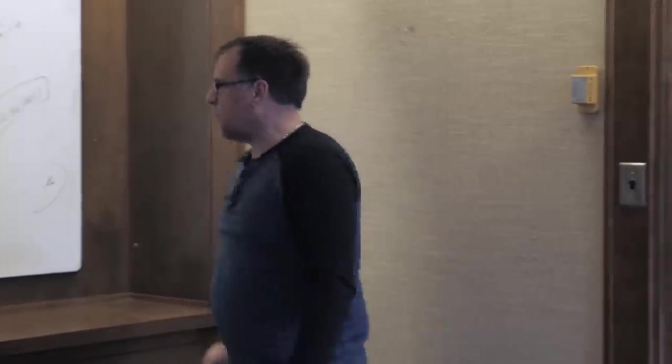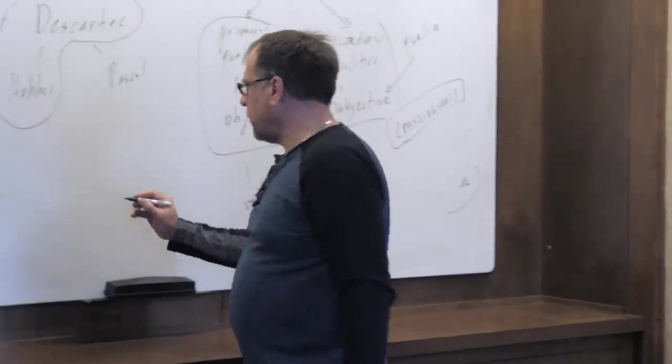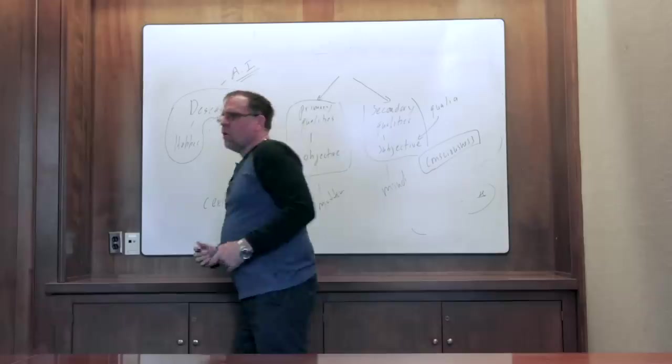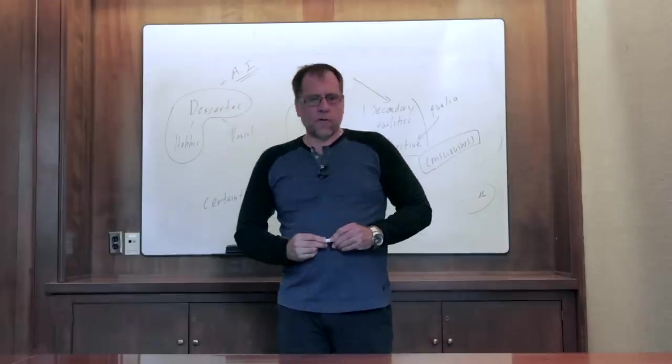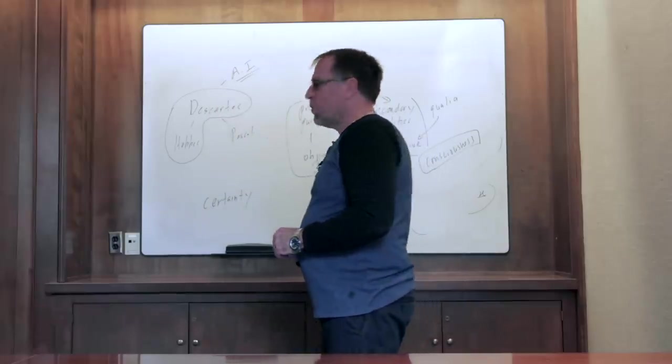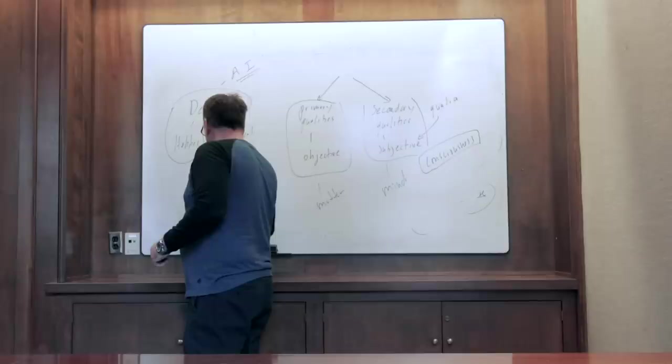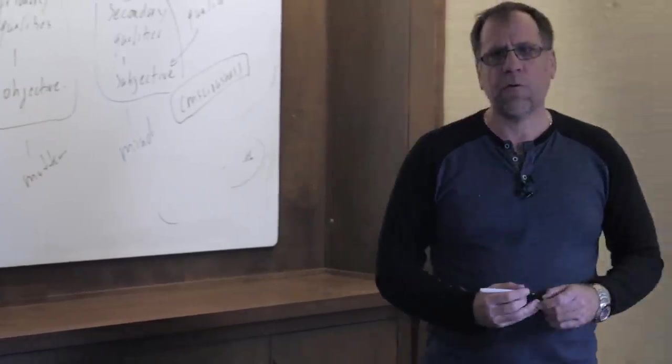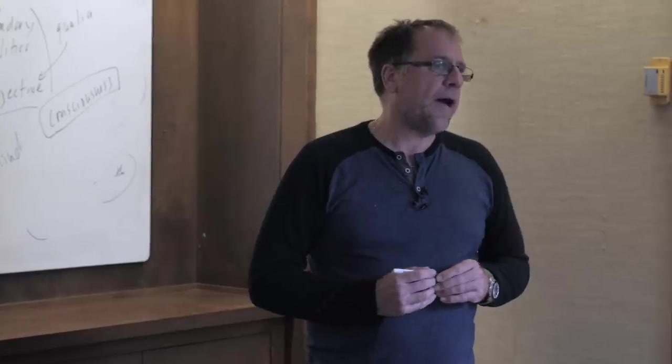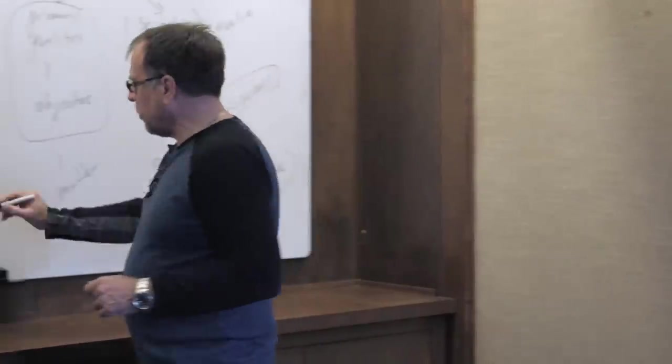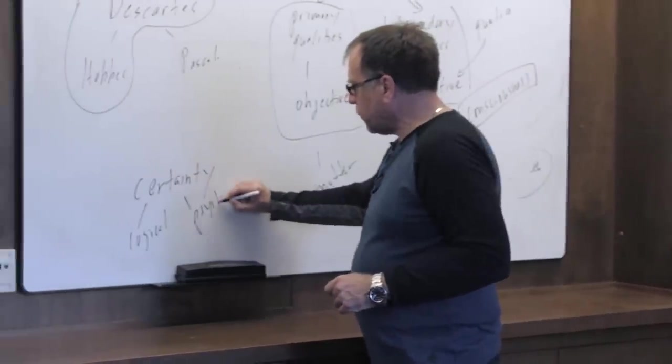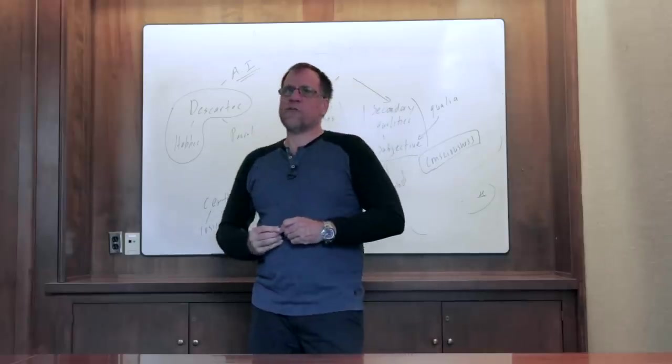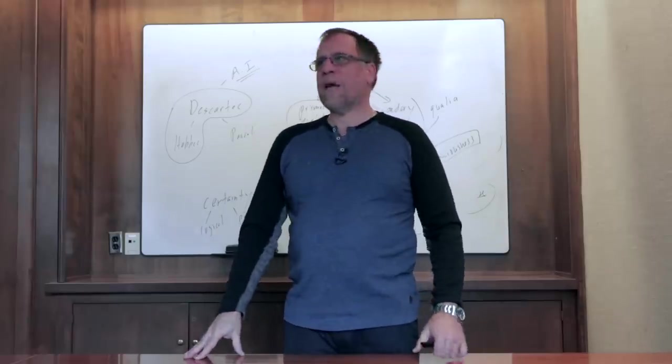He says, I want to doubt everything, try to find something I cannot doubt. He makes what, to my mind—other people have said this; yes, this isn't original to me but I think it's important—he makes a mistake about this notion of certainty. There's two notions of certainty: there's a logical notion and a psychological notion. The logical notion of certainty is something like absolute deductive validity: it's impossible for the premises to be true and the conclusion false. That's different from psychological certainty. Psychological certainty is an inability to doubt.